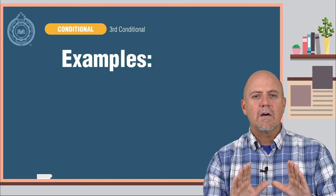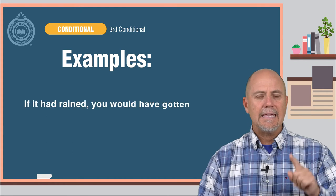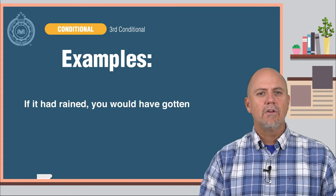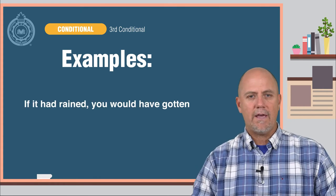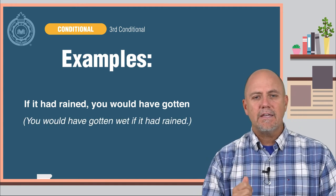Here are some examples of Type 3 conditional sentences. If it had rained, you would have gotten wet. You would have gotten wet if it had rained.